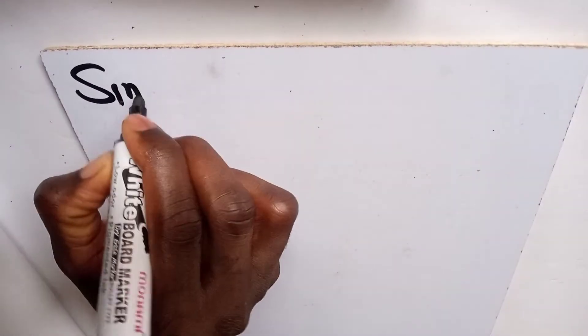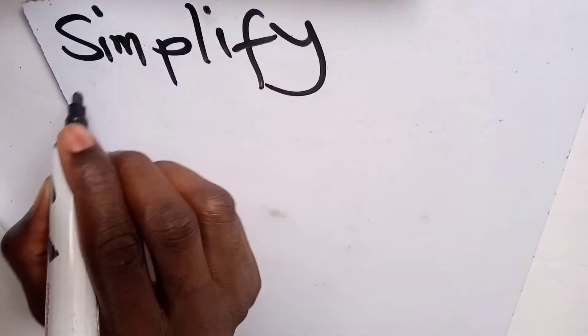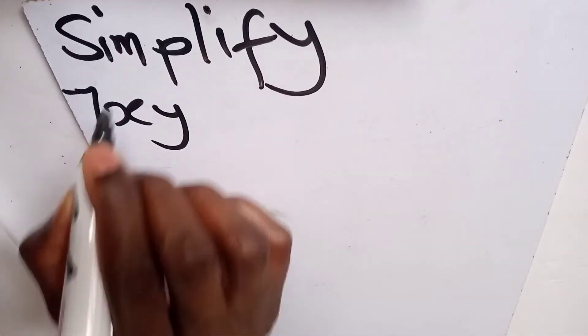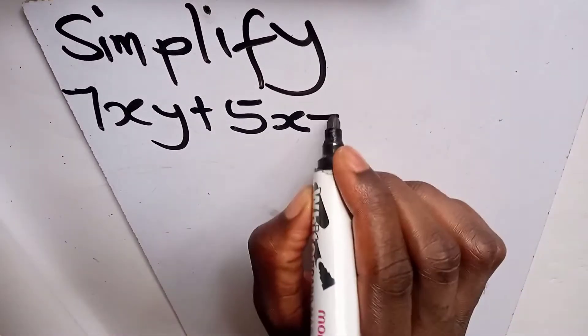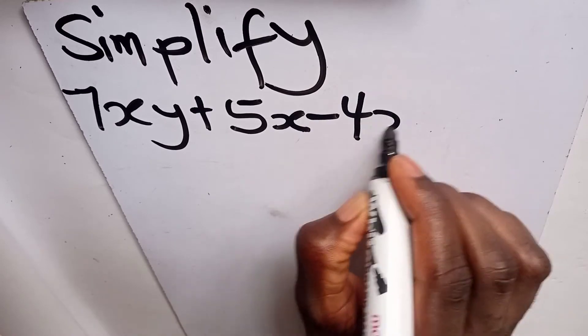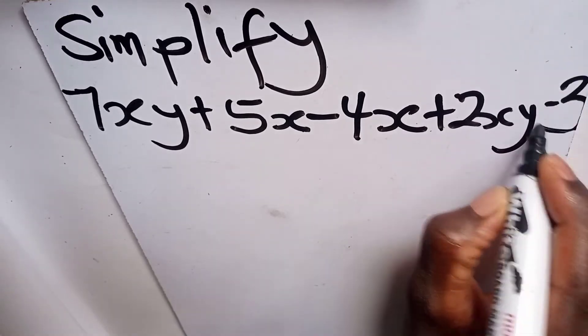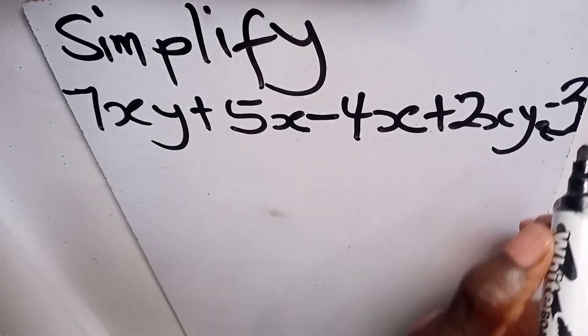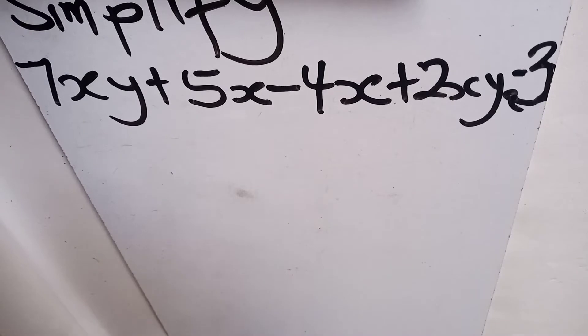Simplify 7xy plus 5x minus 4x plus 2xy minus 3. To be able to simplify this one, we need to first group like terms.